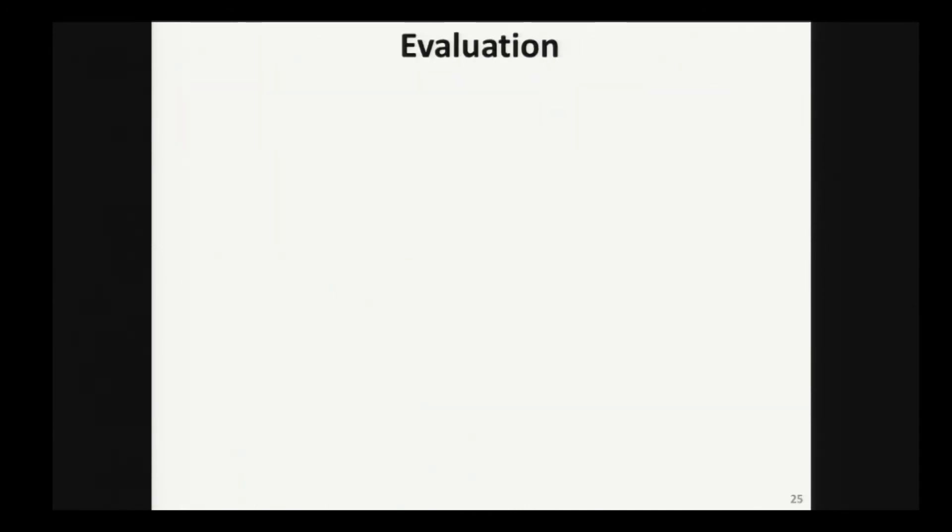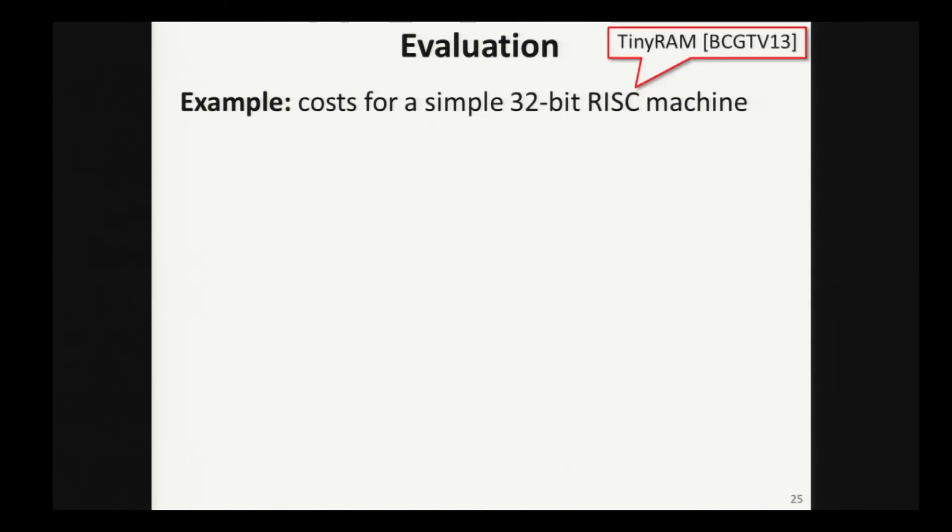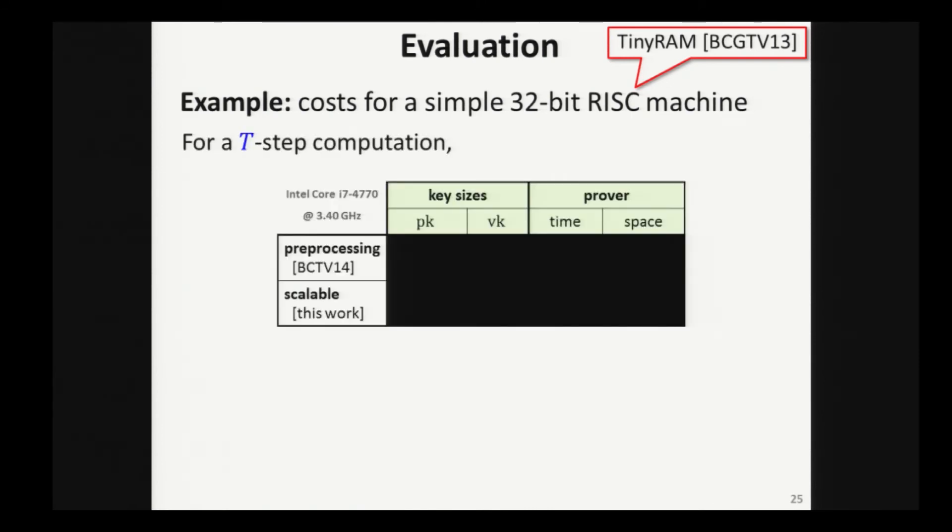What I want to finish with is what's the punchline? At the end of this big stack of construction and recursive composition, what are the numbers that we get? We can apply our system to a number of machines but concretely, let me tell you about what happens if you apply it to a simple 32-bit RISC machine to construct a scalable SNARK for it. Which machine? TinyRAM, it was introduced here at Crypto last year. So, what I want to tell you is I'm going to do a comparison for a T-step computation as T grows to infinity between a preprocessing SNARK that has these inefficiencies and our scalable SNARK that has been bootstrapped. And you will see the trade-offs between the two. Let's look at key sizes. In a preprocessing SNARK, the proving key grows with a time-bound T. You pay approximately half a megabyte per time step. However, in our system for this particular machine, we have a proving key that is just 55 megabytes for any choice of T.